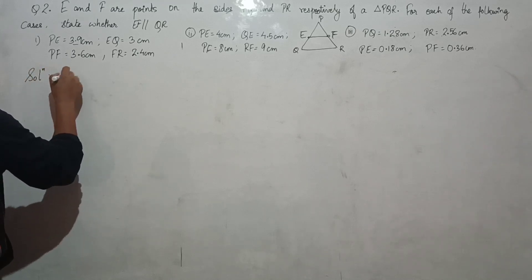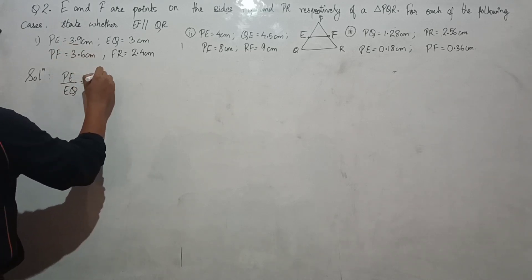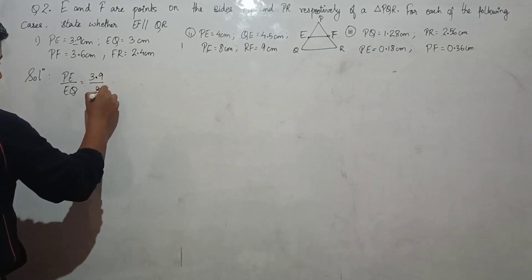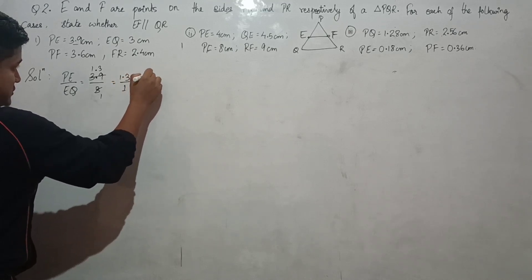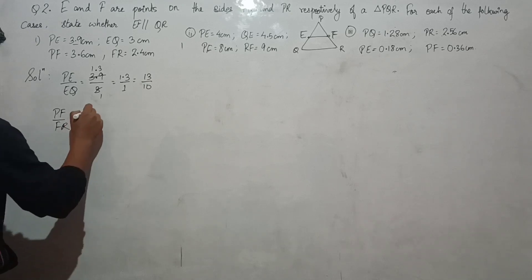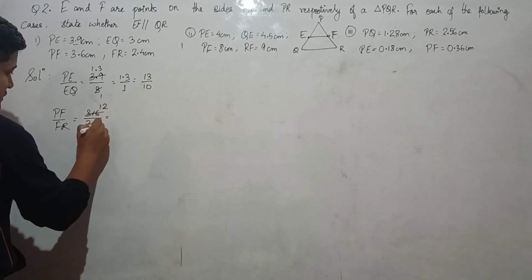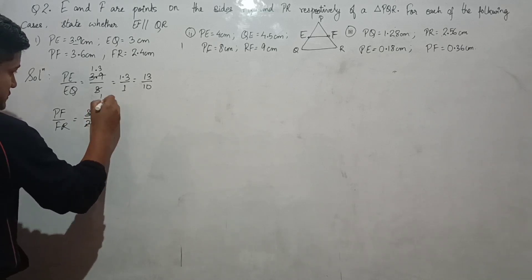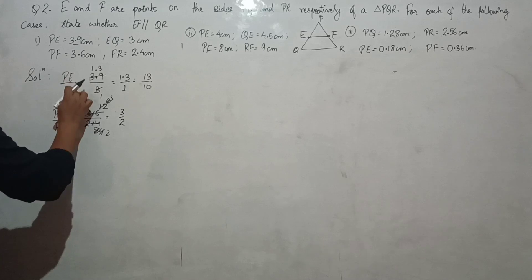Let us check: PE/EQ where PE is 3.9 and EQ is 3. If we cancel, 3.9/3 equals 1.3 or 13/10. Now PF/FR where PF is 3.6 and FR is 2.4. Canceling the decimals: 36/24 equals 3/2.